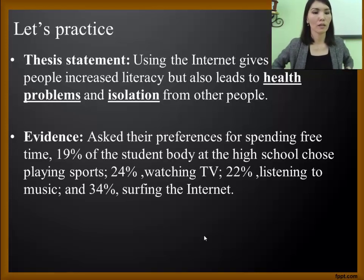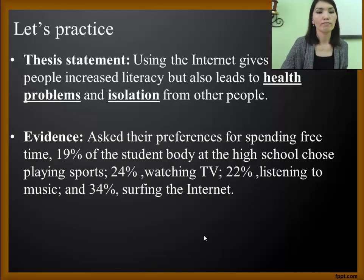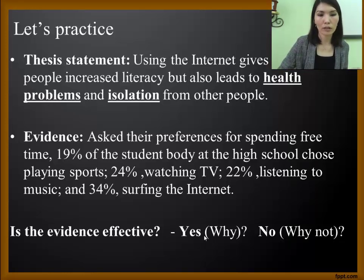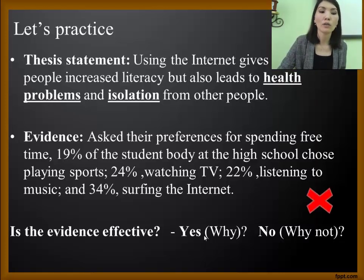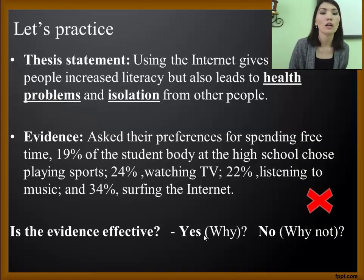Here is the first evidence: 'Asked their preferences for spending free time, 19% of the student body at high school chose playing sports, 24% watching TV, 22% listening to music, and 34% surfing the internet.' Is this evidence effective? This is not good evidence, as it only considers the percentage of students who surf the internet. However, it does not talk about the causes or the results of this screen time.